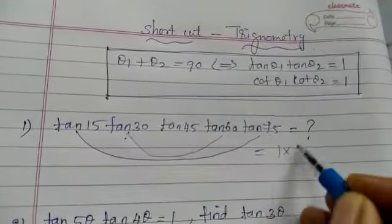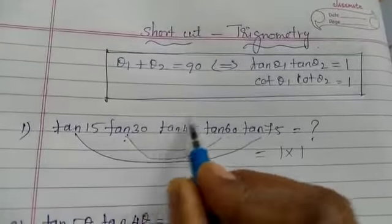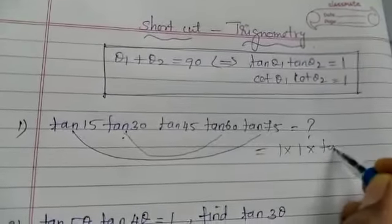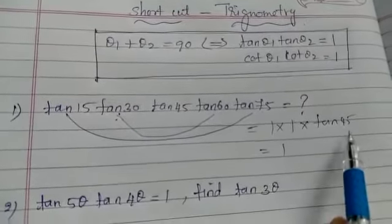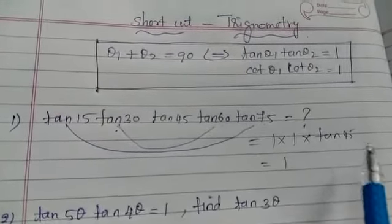So what is the answer? 1 into 1, and remaining is tan 45. So the answer is 1 times tan 45. You know that tan 45 angle is 1. Okay, the next problem.